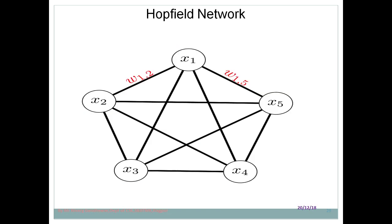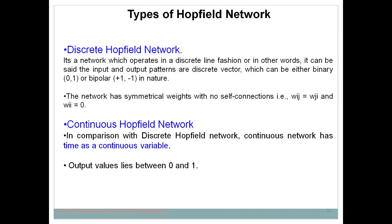There are basically two types of Hopfield network: one is the discrete Hopfield network and the second is the continuous Hopfield network. The discrete Hopfield network operates in a discrete fashion — the input and output patterns are discrete vectors. The value of the output variable can be either binary (zero or one) or bipolar (minus one or plus one). This is the specialty of the discrete Hopfield network.